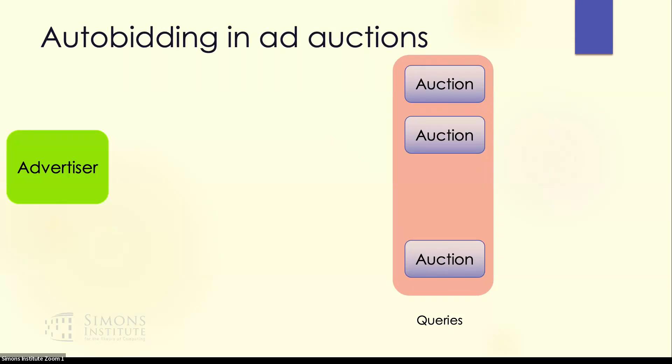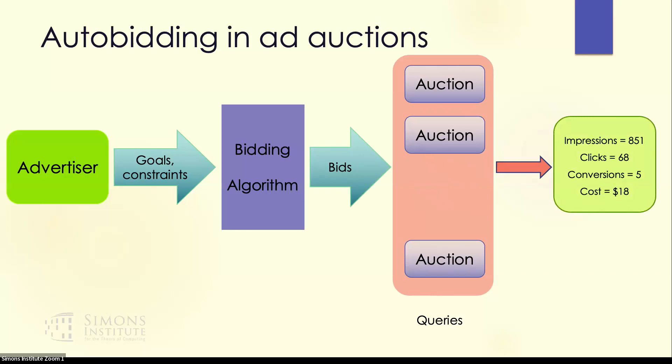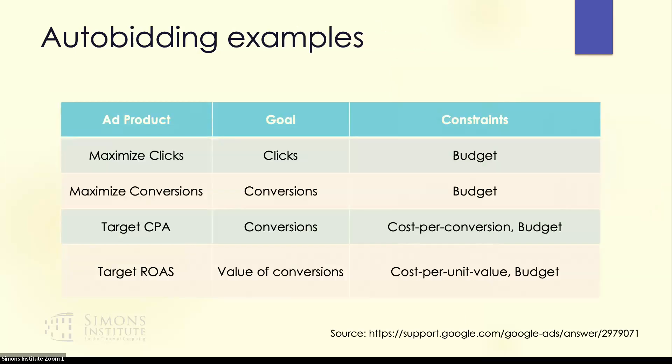Recently, advertisers have been increasingly using auto-bidding, where instead of bidding directly into the auctions or directly submitting per-keyword bids, they give their goals and constraints to an auto-bidding system, which converts them to bids on their behalf. The auto-bidder takes in these goals and constraints and tries to optimize the objective function subject to the constraints the advertiser has specified. Examples include maximizing clicks subject to a budget constraint, or maximizing conversions subject to an average cost per conversion constraint. This is increasingly being used in the advertising industry, and most major advertising platforms offer some form of auto-bidding.